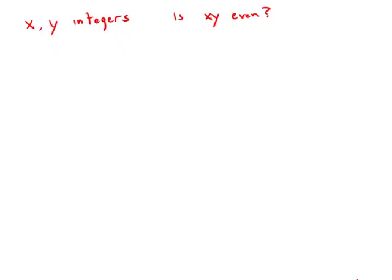If x and y are integers, is x times y even? Statement number one tells us that x is one greater than y, x equals y plus one. Well, let's think about this. If y is an odd number,